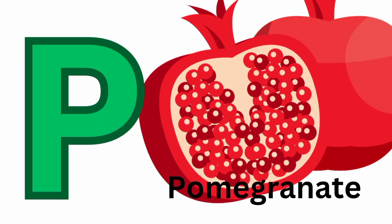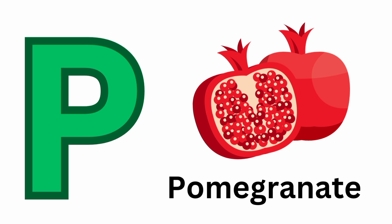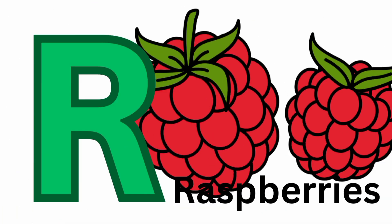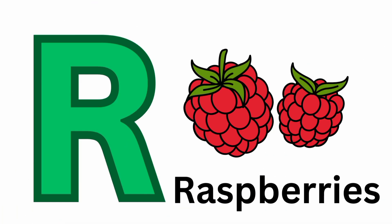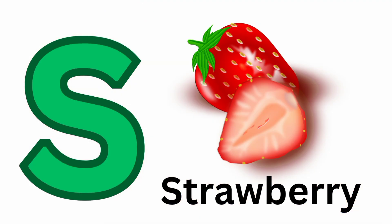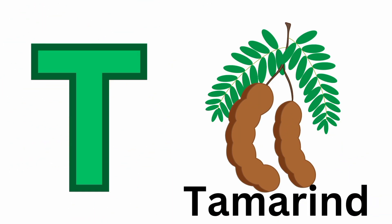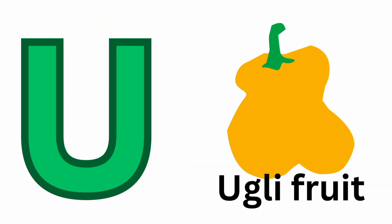P for Pomegranate. Q for Quince. R for Raspberries. S for Strawberry. T for Tamarind. U for Ugly Fruit.